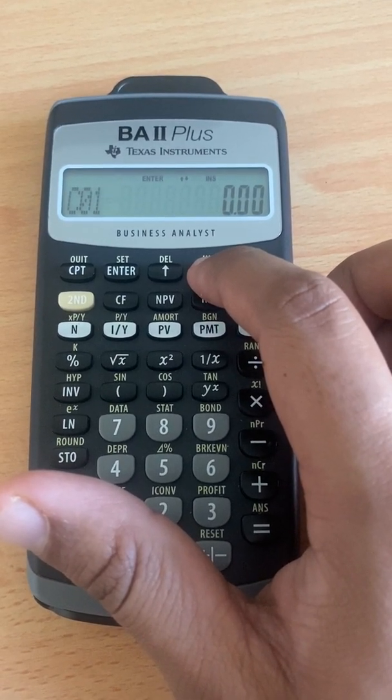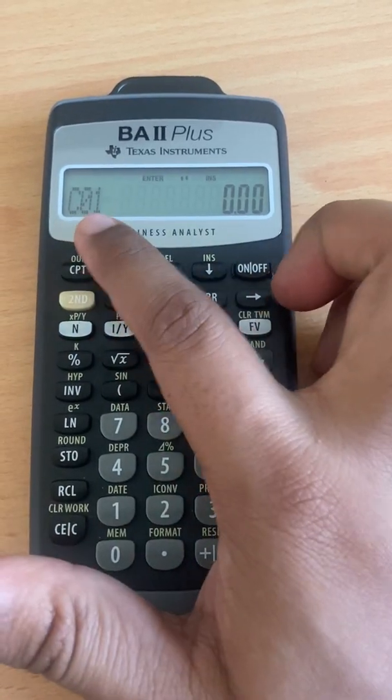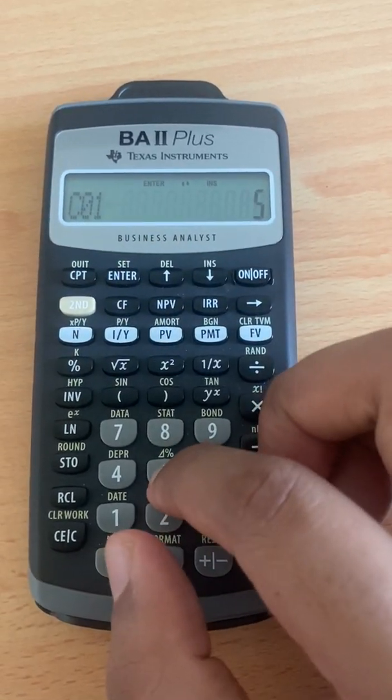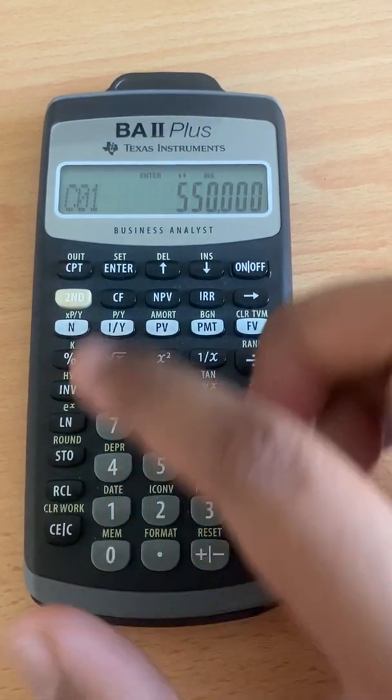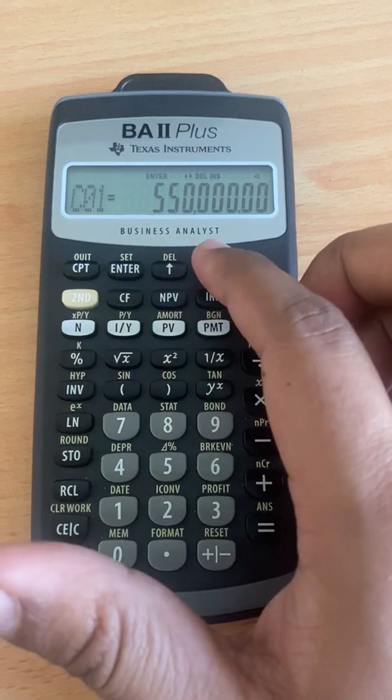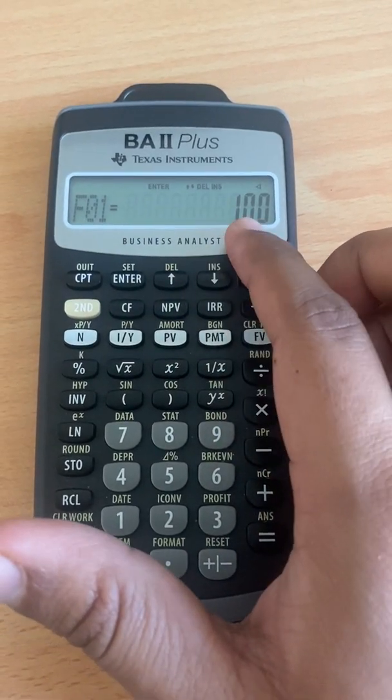Then we press C01. The first cash flow at period 1 is 550,000. You press enter. It's positive because it's cash inflow. Frequency 1, nothing to change.